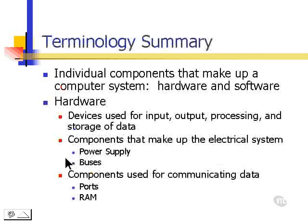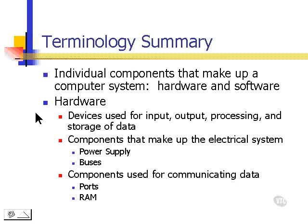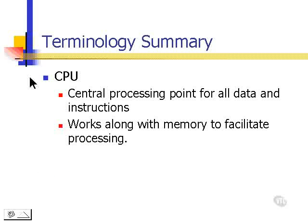Let's summarize what we've learned. Individual components that make up a computer system are hardware and software. Hardware includes devices used for input, output, processing, and storage of data. Components that make up the electrical system are the power supply and the buses. Components used for communicating data are ports and RAM. The CPU is one of the most important components in the computer — it's the central processing point for all data and instructions, and it works along with memory to facilitate processing.